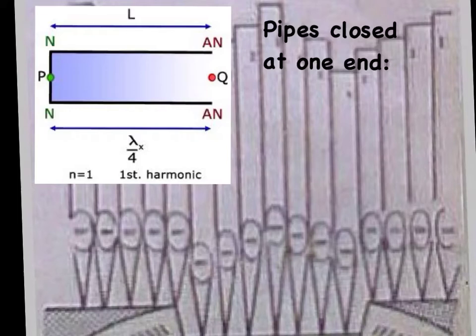We have two kinds of pipes. We have pipes that are open at one end, and pipes that are open at both ends. A pipe open at one end would be like a pan pipe, where you blow down into the top, or when you blow into your root beer bottle and you can get it to make noise.